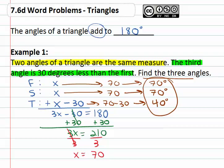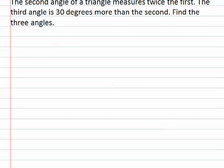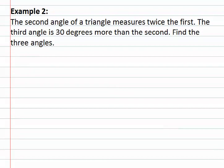Knowing they all add up to 180 and representing each angle algebraically, we're able to quickly find the angles of the triangle. Let's try one more example to see if we can do the same thing. The second angle of the triangle is twice the first, the third is thirty more than the second. So we're going to see what we know about the first, second, and third angles.